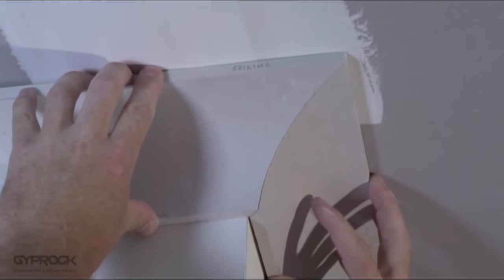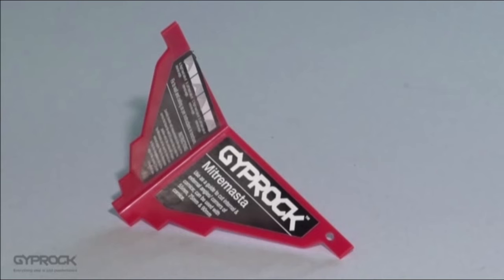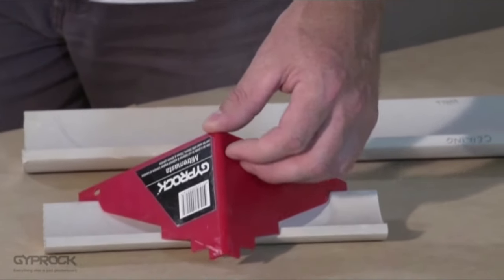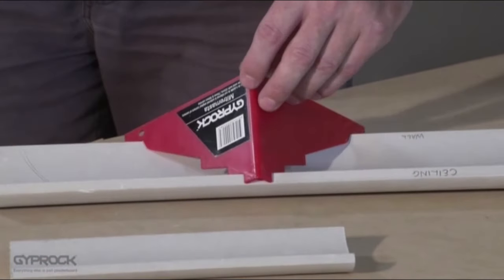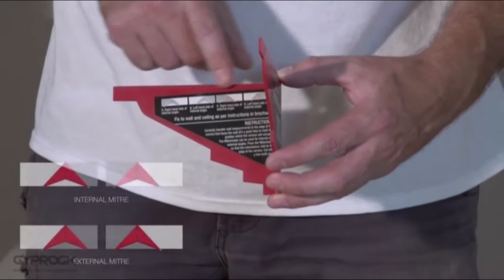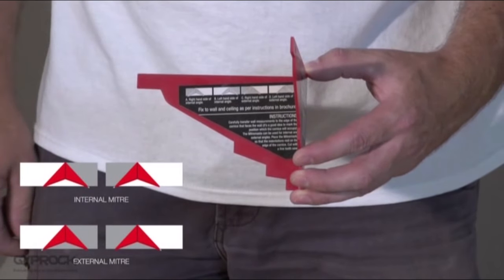If you're using Gyproc Cove cornice you can use a little gadget called the Gyproc Mitre Master to make the job easy. A mitre master can be used for all Gyproc Cove cornice profiles from 55 millimeters to 90 millimeters and the instructions on the side show which side to cut along and which side is waste. The waste parts are shown in grey.